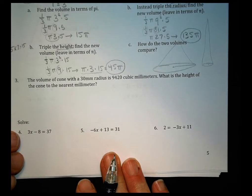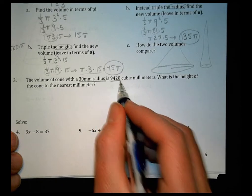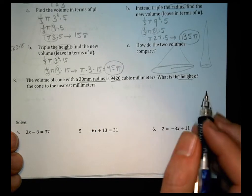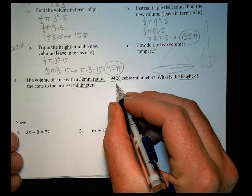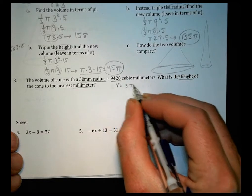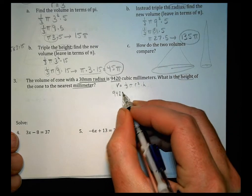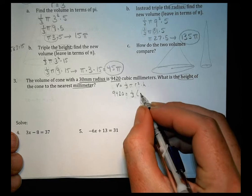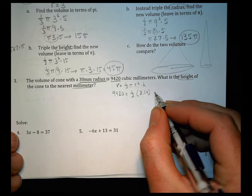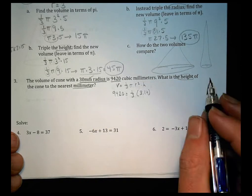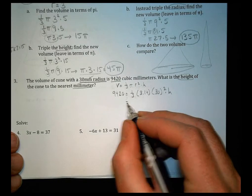Number 3. The volume of a cone with a 30 millimeter radius is 9,420 cubic millimeters. What is the height of the cone to the nearest millimeter? So, again, we take our formula. So we have the volume equals 1/3 pi r squared times h. That gave us a volume of 9,420 equals 1/3. For pi, let's put in 3.14. For the radius, we have 30 squared. And we don't know the height. So let's keep on bringing this down.